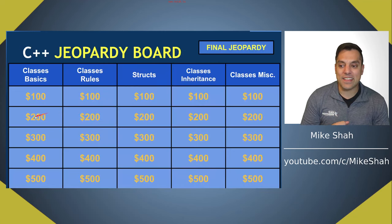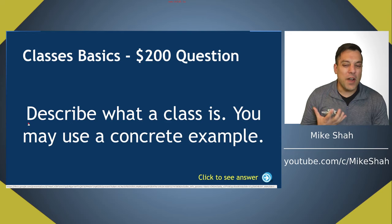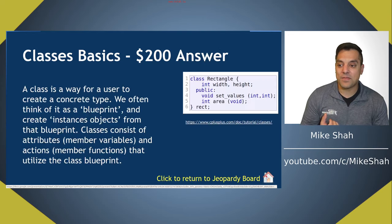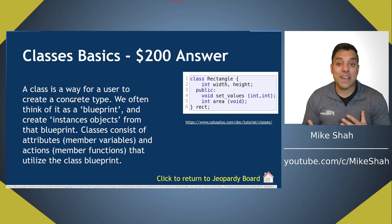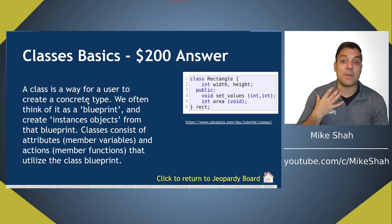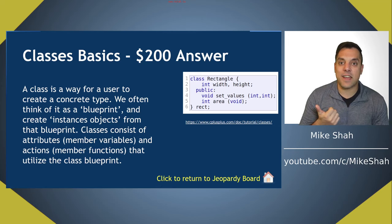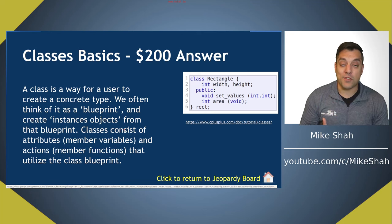Let's return to the board and take this to 200. Describe what a class is — you may use a concrete example. This is a frequent question I've gotten on interviews, especially for entry-level positions. You can describe a class as a blueprint for objects you'd like to create. Architecture examples work well — talking about cars, how they're laid out, and how you can have different models with attributes and member functions.